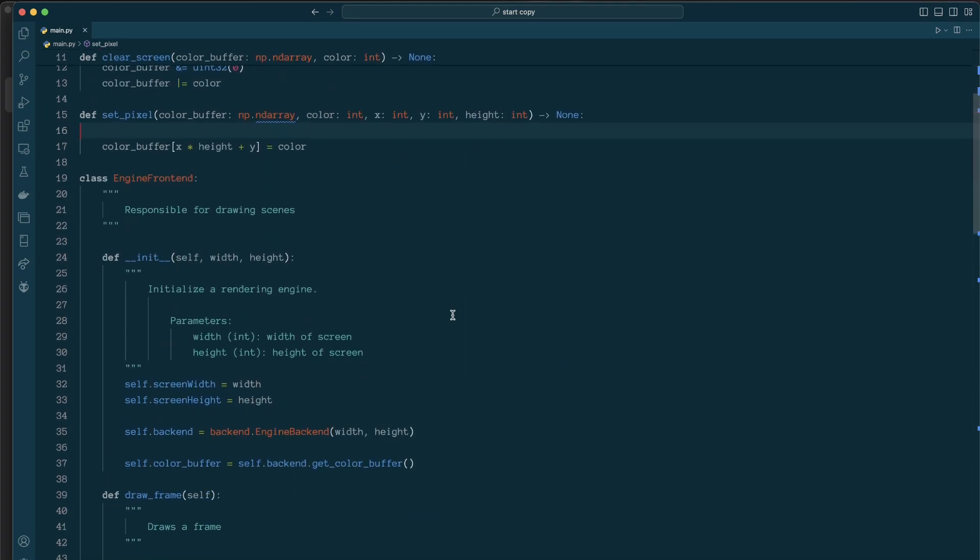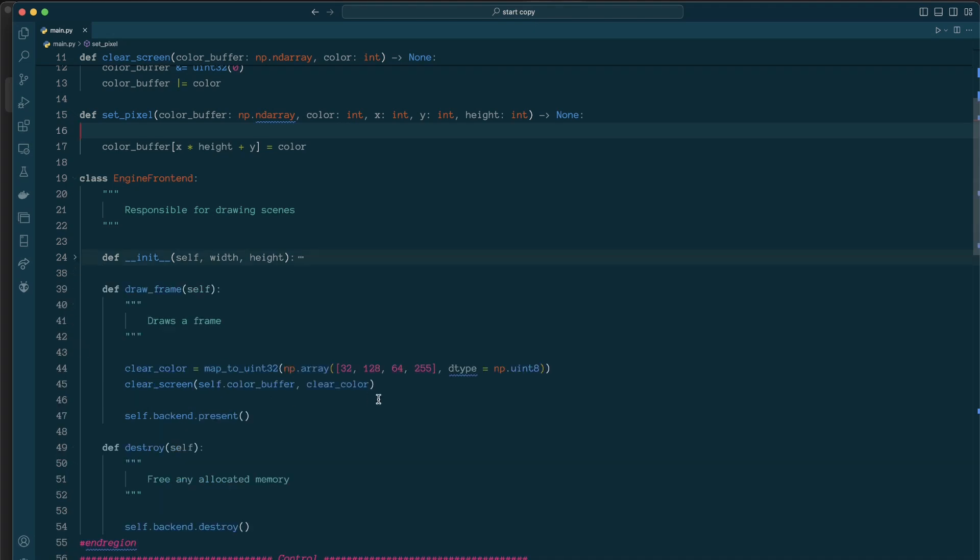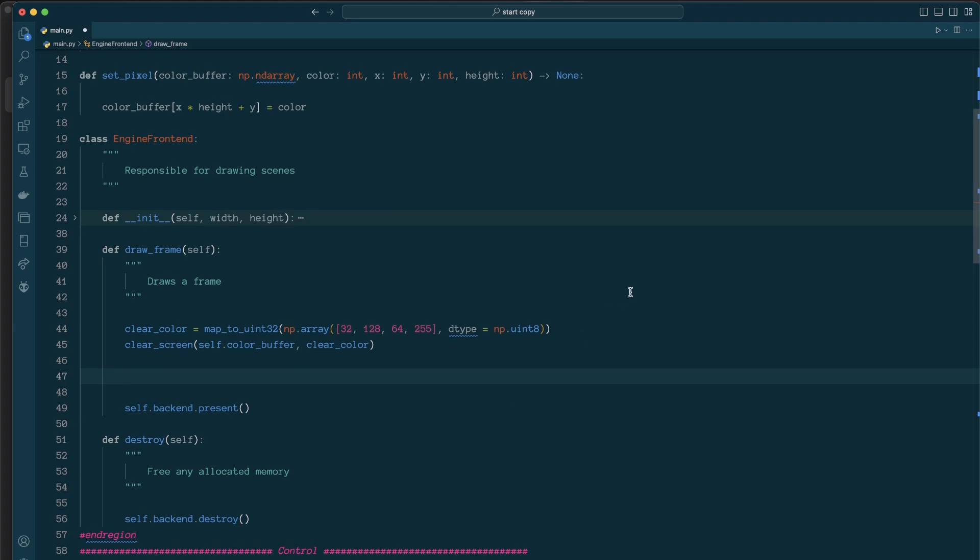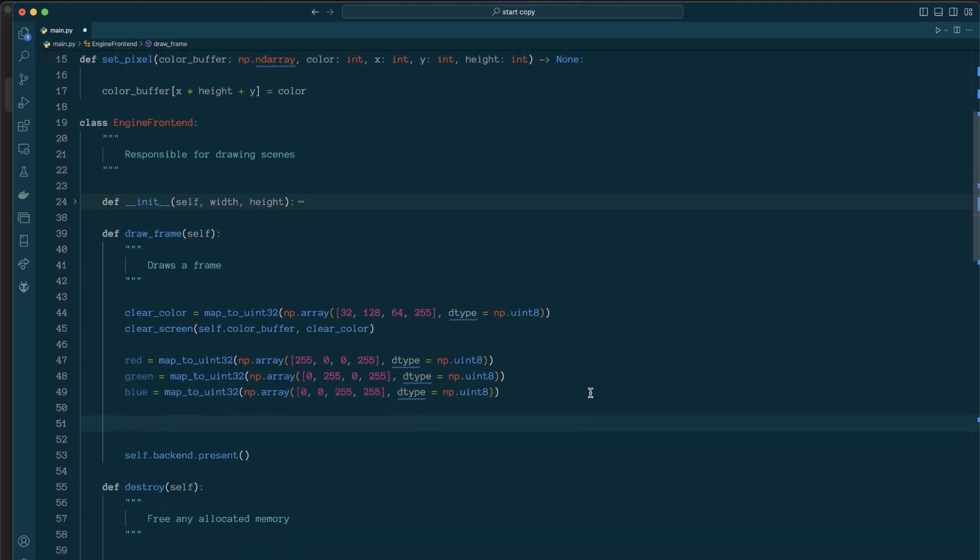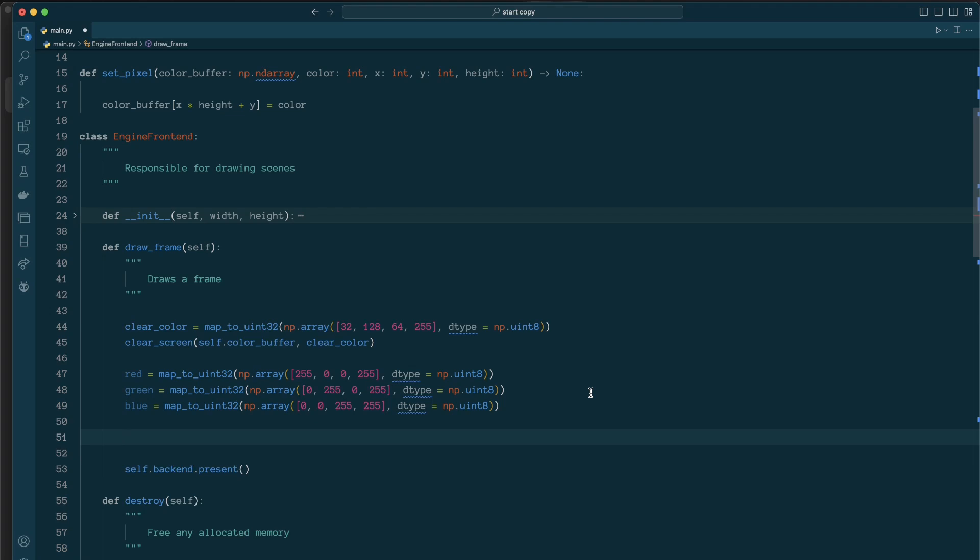So now to test this out, I'll go down to my engine. And in my render frame, my draw frame function, I'm just going to define a few colors. I'll just go with the canonical red, green, blue. And then I'm just going to call that set pixel function. For instance, let's say we want to set the top left pixel to red. I'm not going to do the top left. That's a little hard to see. I'm going to go with a margin of 32 pixels. So 32 pixels off the left, 32 pixels off the top of the screen. And I'm also going to need to pass in the screen height. And there we go.